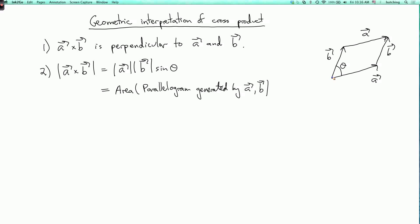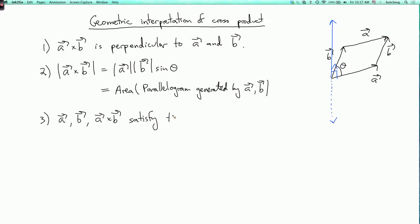So A cross B is perpendicular to A and B and points sort of like this — it's hard to draw, but it's perpendicular to both. We know its length, so that determines it up to one last choice: there are two possible vectors perpendicular to A and B with this length. We want the one given by the right-hand rule: A, B, and A cross B satisfy the right-hand rule. Point your right-hand fingers toward A, curl them toward B, and your thumb points in the direction of A cross B.